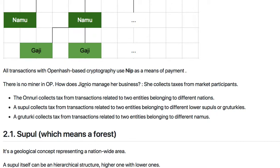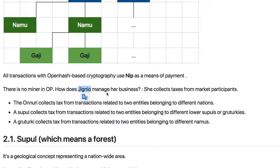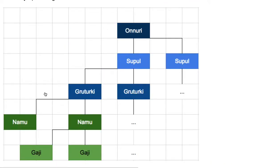How does a jingyo manage its business? There are four kinds of jingyo: NAMU, Grootgi, Supul, and Onnuri. They are all servers — they operate Onnuri server, Supul server, Grootgi server, and NAMU server — and they mediate or record transactions.